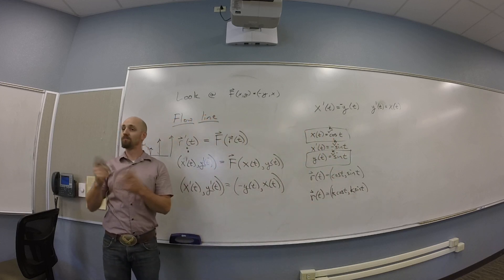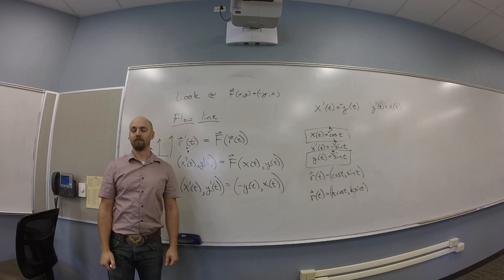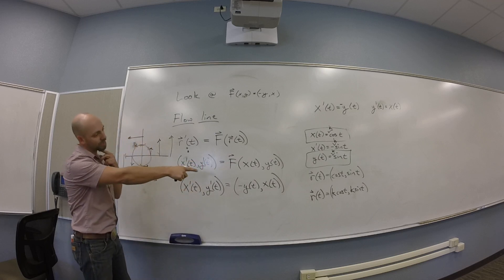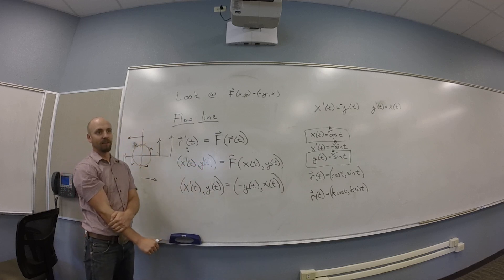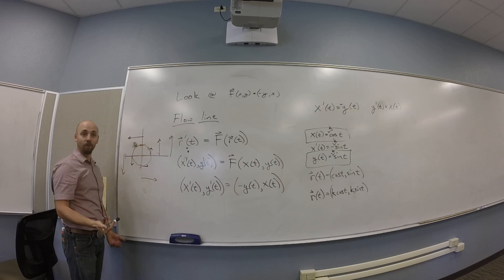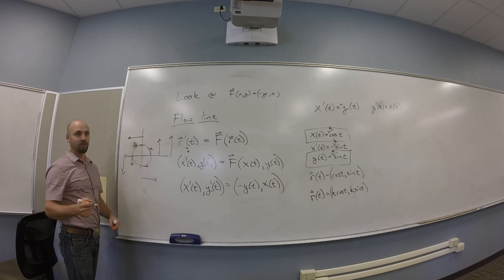So you get r of t is k cos t comma k sine t. If k is a constant, should we use a t or another variable and not k, because k is usually a constant? Sure. So what's k? Well, k really depends on where you start here. You guys see that? Like, I dropped a little bit of orange stuff in at 1, 0, and I kind of thought about flowing it around. But if I drop a little bit of fish food somewhere else, that thing starts out with a k. You guys see that?